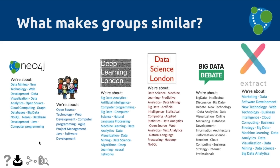The next thing we need to do is find some data to help us answer that question. We've moved into the data stage. These are a few examples of what might make groups similar. Each group is able to choose up to 15 topics or tags describing what they're about. For example, the Neo4j group has data mining, Neo4j, computer programming, and database development, whereas the Extract meetup is about cloud computing, big data, and machine learning. These groups individually pick their topics, but there's some overlap between them — and we're going to use that to do a content-based recommendation.